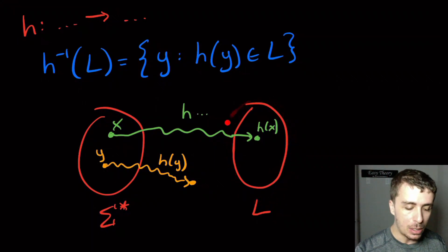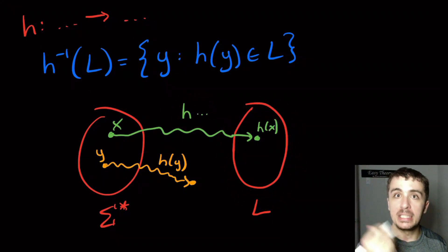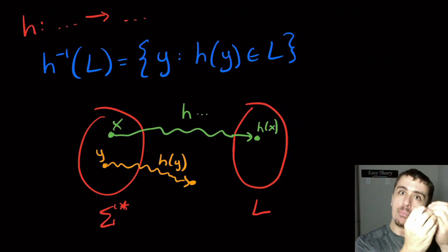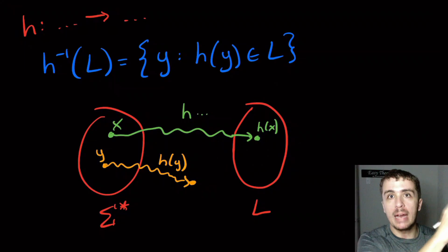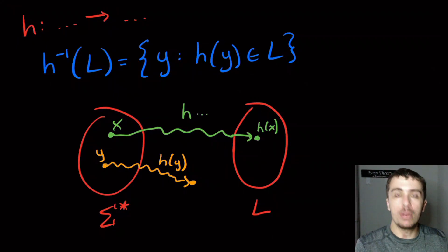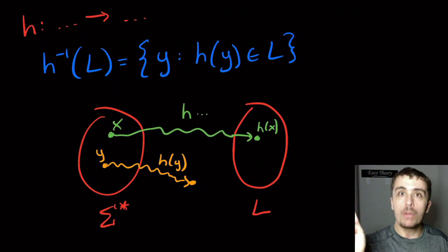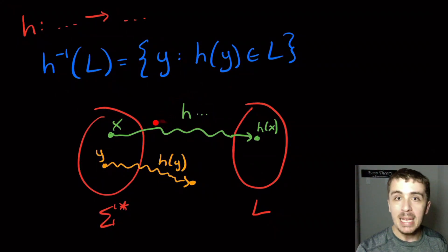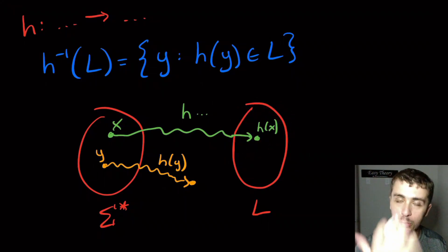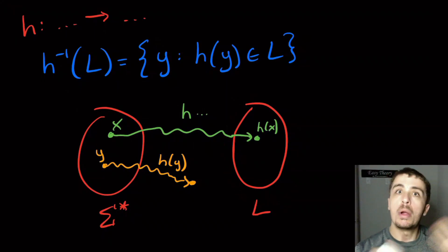We have a decider for this guy over here. And the homomorphism is a computable property, because we can break up the string into each individual character and apply the homomorphism to each one of them. Homomorphisms in general are computable. So we assume that the homomorphism is computable for this. But applying the homomorphism, that means that if we have the string X as input, this is the input over here, we can just apply the homomorphism and get the string H of X. We can write it onto the tape. And then we can just run the decider for whatever the language is.